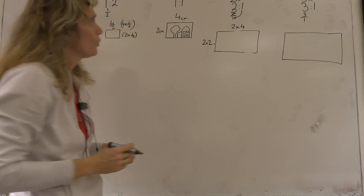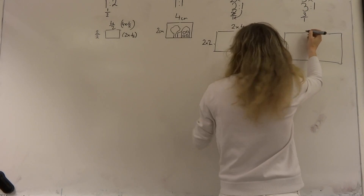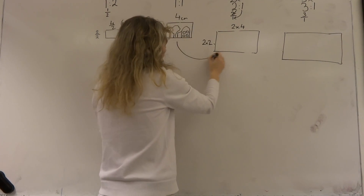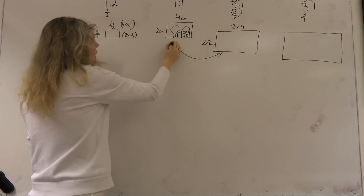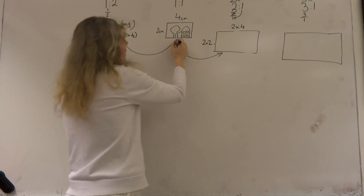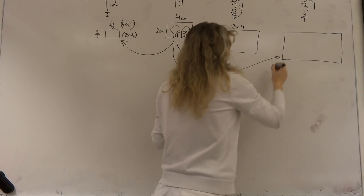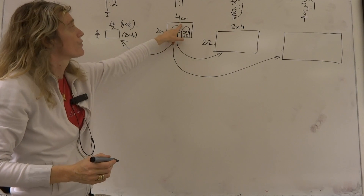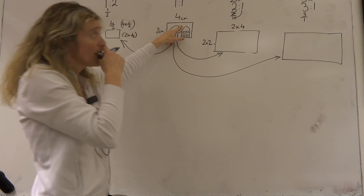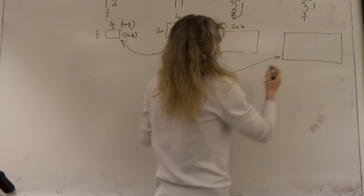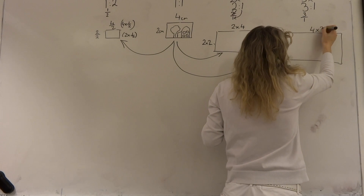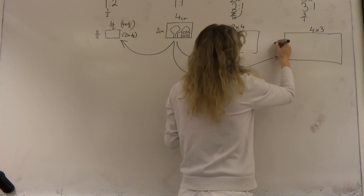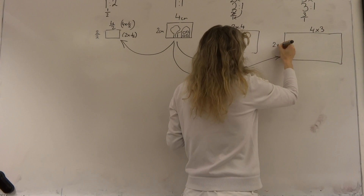In the final one, the new length — because we're enlarging this one always. Here we're enlarging, here we're reducing. And in this one we're also enlarging the original photo in a scale of three to one. So we are enlarging four centimetres three lots of them — four times three — and the breadth, two times three.